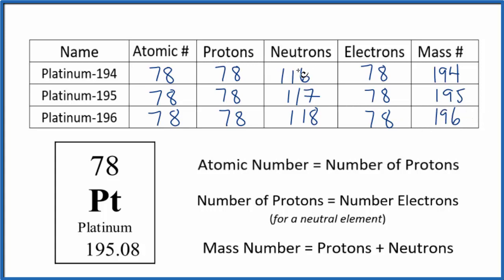So we found the protons, neutrons, electrons, and mass number for platinum, each isotope of platinum. Most of the time when you're given a table like this, you'll be given either the neutrons or the mass number, so you can figure the other one out as long as you know the protons.